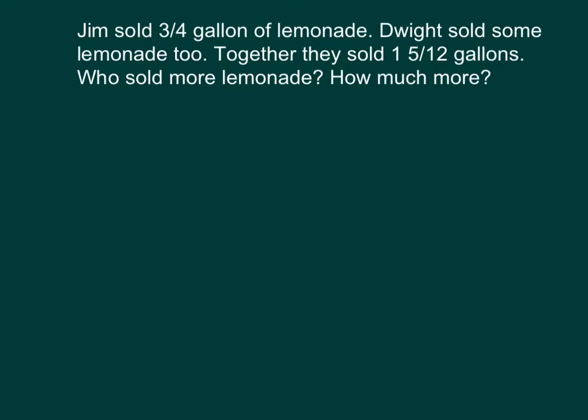Jim sold three-quarters of a gallon of lemonade. Dwight sold some lemonade too. Together they sold one-and-five-twelfths gallons. Who sold more lemonade, and how much more?